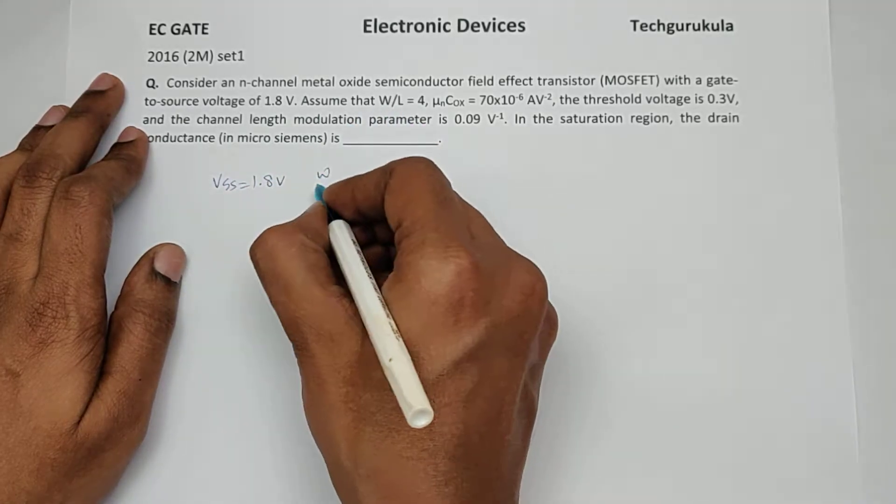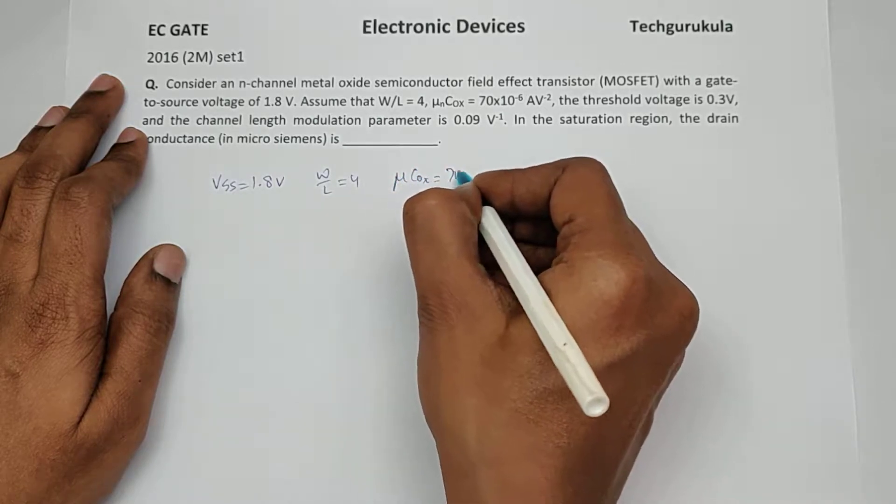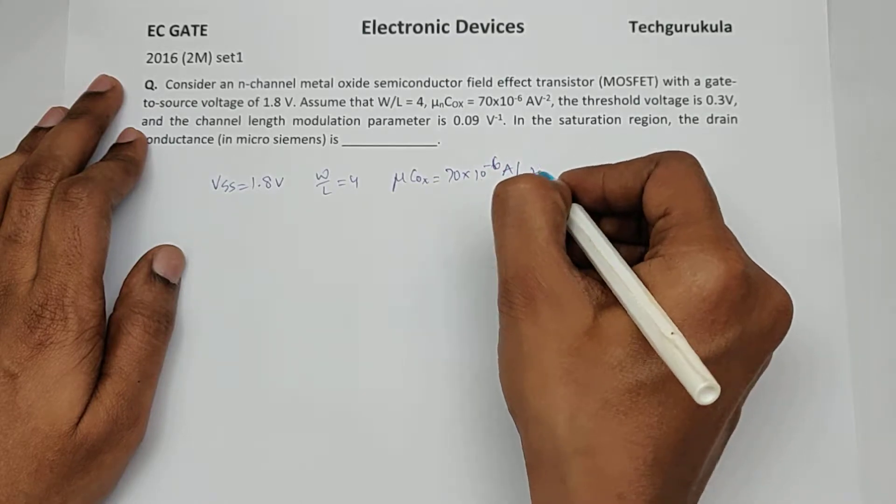Assume that W by L is equal to 4, mu C ox is equal to 70 times 10 power minus 6 ampere per volt square.